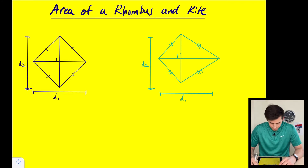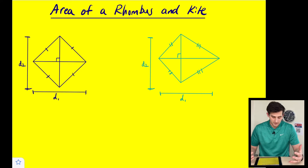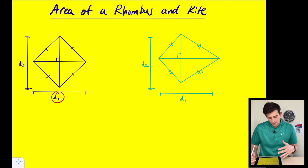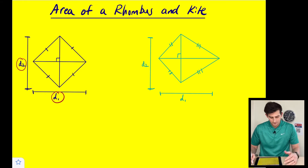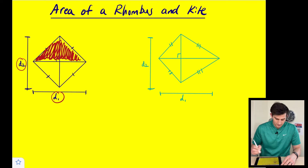So let's look at what we have on the screen. Over here on the left we are starting with a rhombus — notice that all four sides are congruent. There's our rhombus and we have two diagonals here. Our horizontal diagonal we're calling diagonal number one and our vertical diagonal we will call diagonal number two.